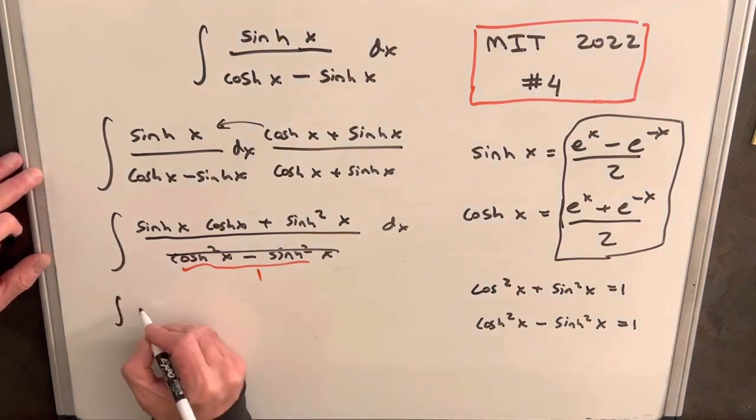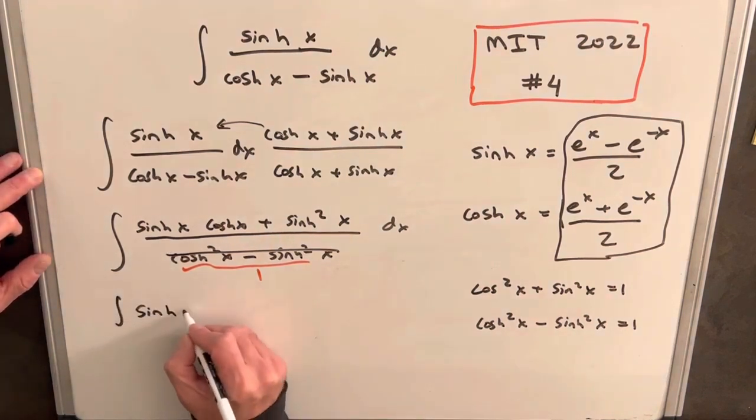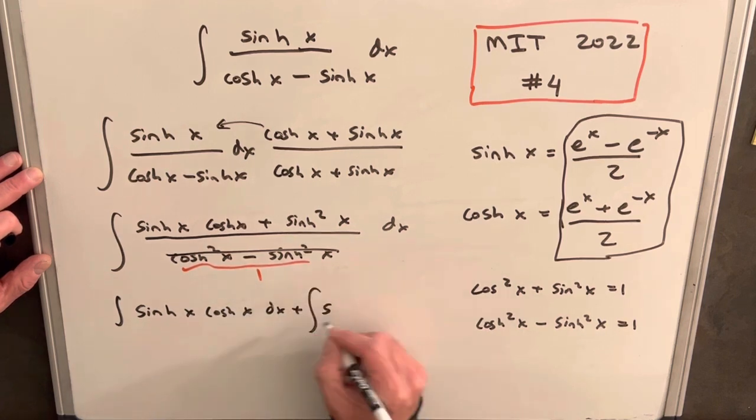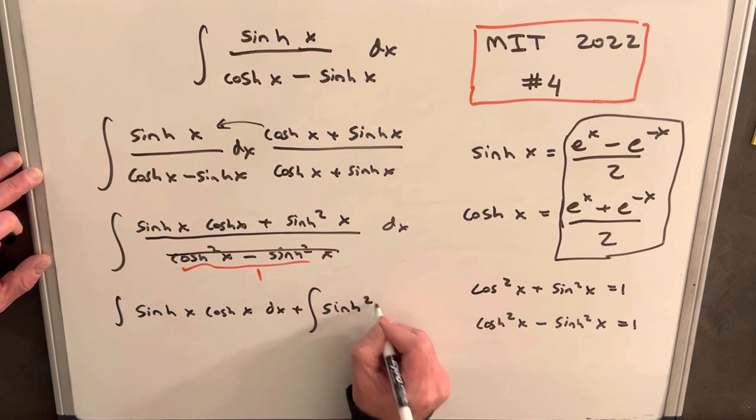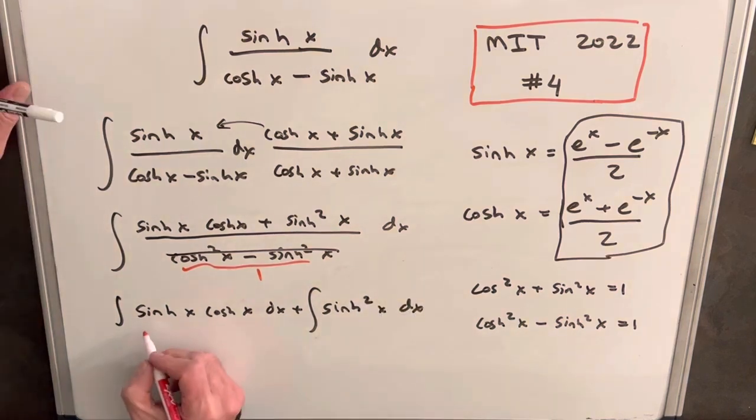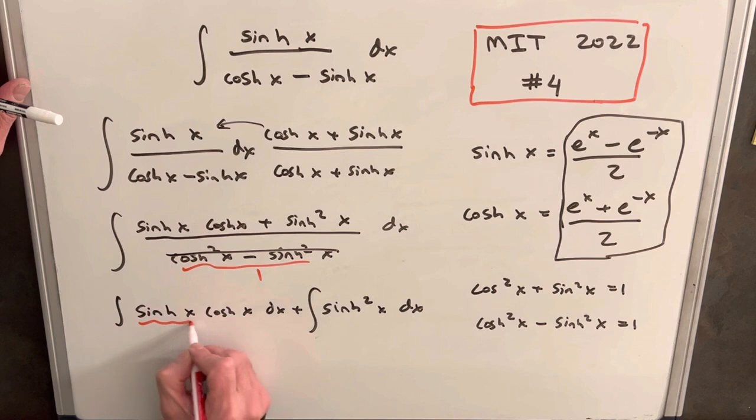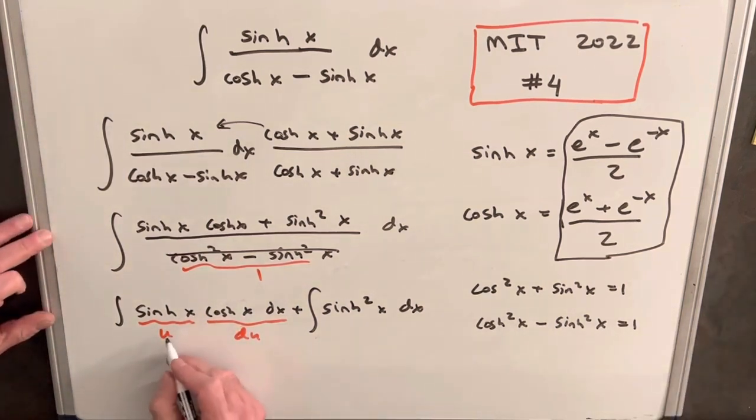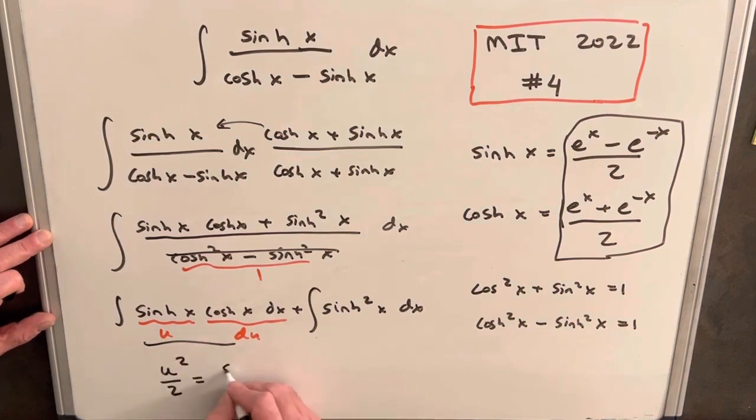Then we can break up this integral of sinh x cosh x dx plus just the integral of sinh squared x dx. Now, on the first integral, we have a really simple u substitution. If we make this u, then this is just du, the derivative of sinh is cosh. So then, without taking too much time, this whole thing here is just going to be u squared over 2 or sinh squared x over 2. So this is going to be part of our answer right here.